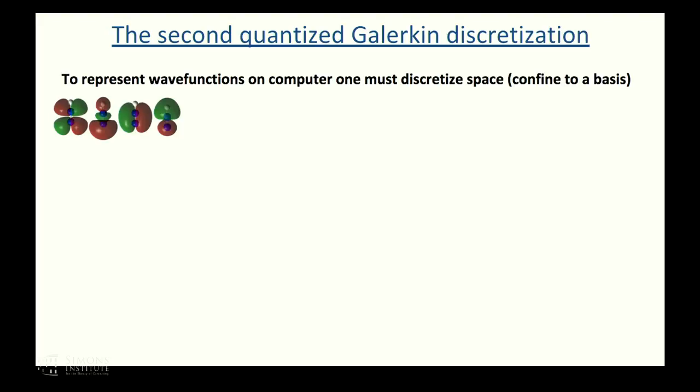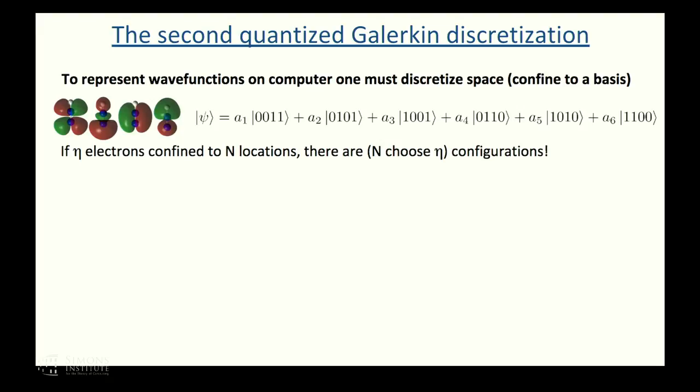Now I'm going to talk about how we actually put this problem on a quantum computer. We are putting a wave function on a computer, so we're going to have to discretize space to some extent and confine these electrons to a basis. A common basis used in classical electronic structure is molecular orbitals. If we have eta electrons confined to n locations and basis functions, there's n choose eta configurations. The wave function may span combinatorially many configurations. In the most straightforward encoding, we have one qubit for each orbital. The qubit is one if there's an electron there and zero if there's not.